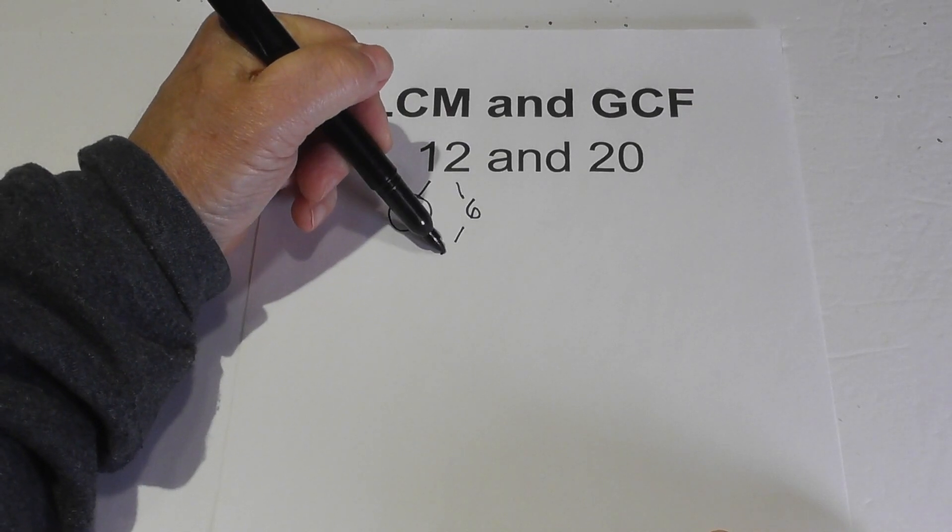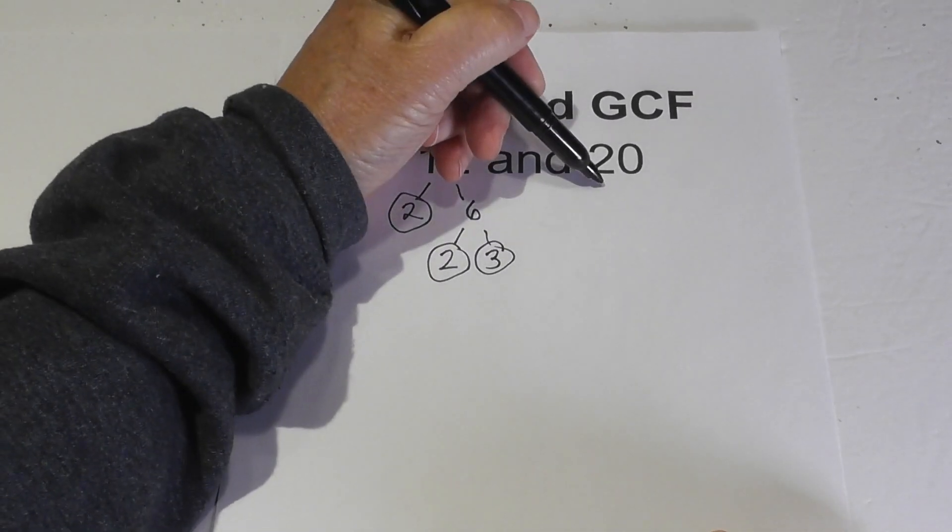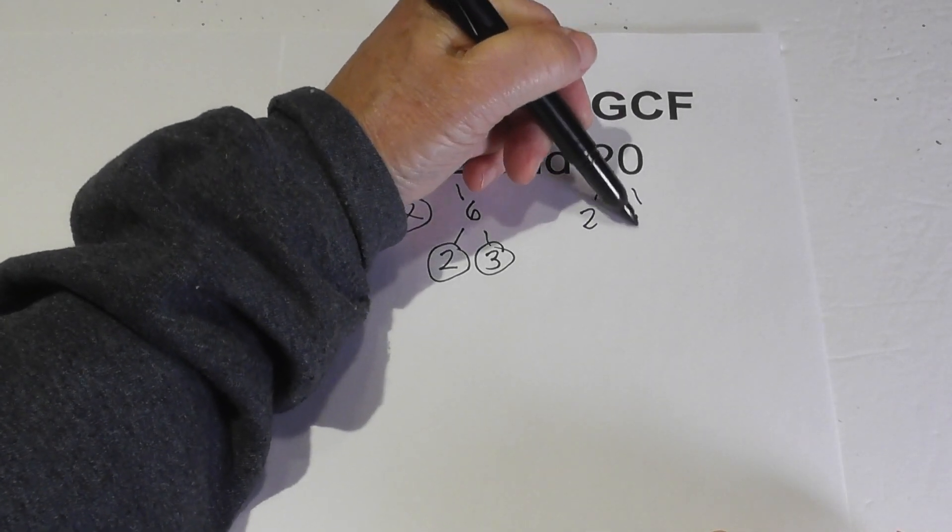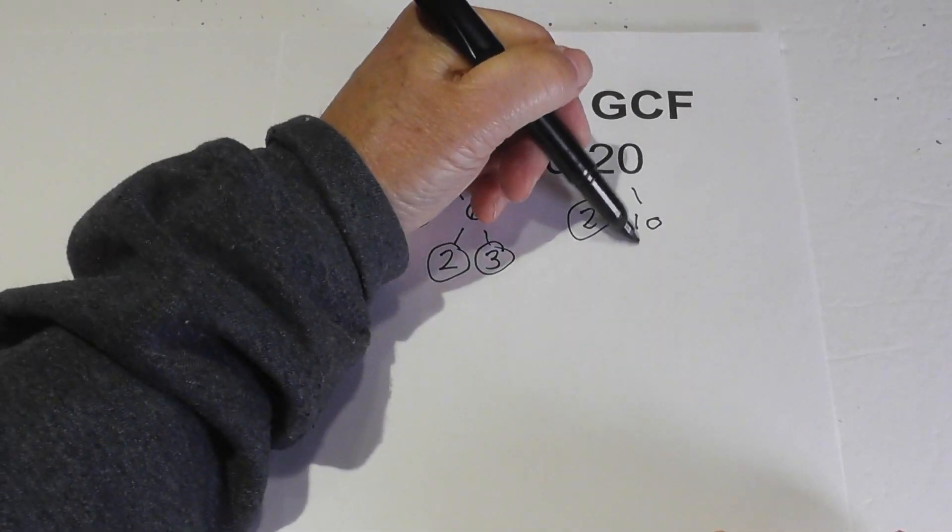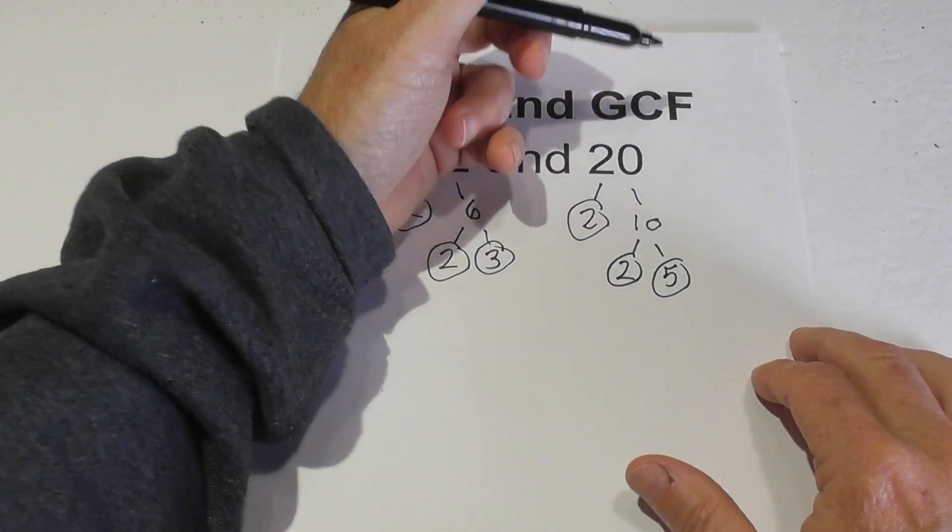And then 2 times 3. Circle both because they are prime. And now for 20, 2 times 10. Circle the 2 because it is prime, and then 2 times 5. Circle both of these.